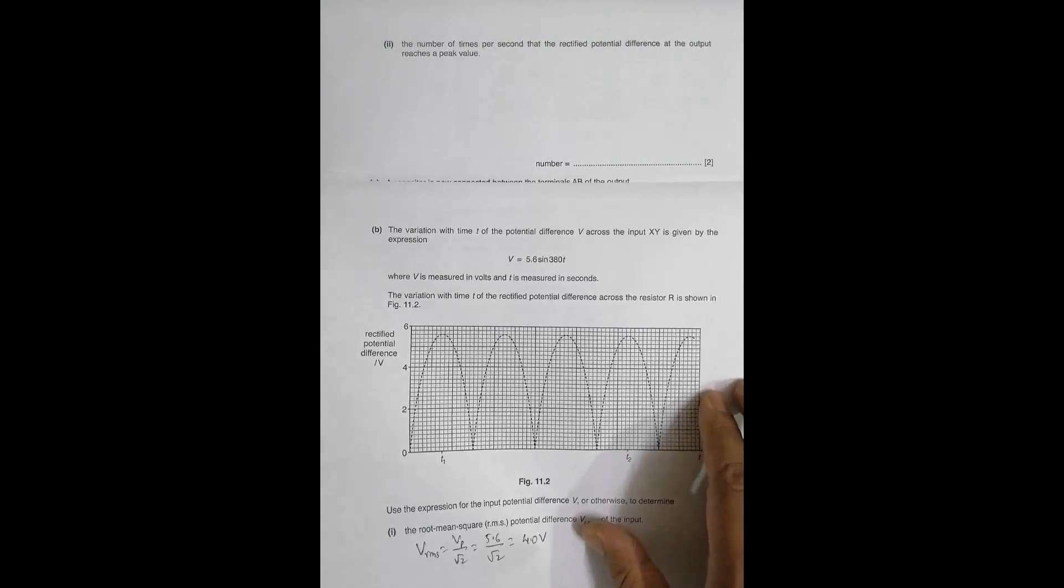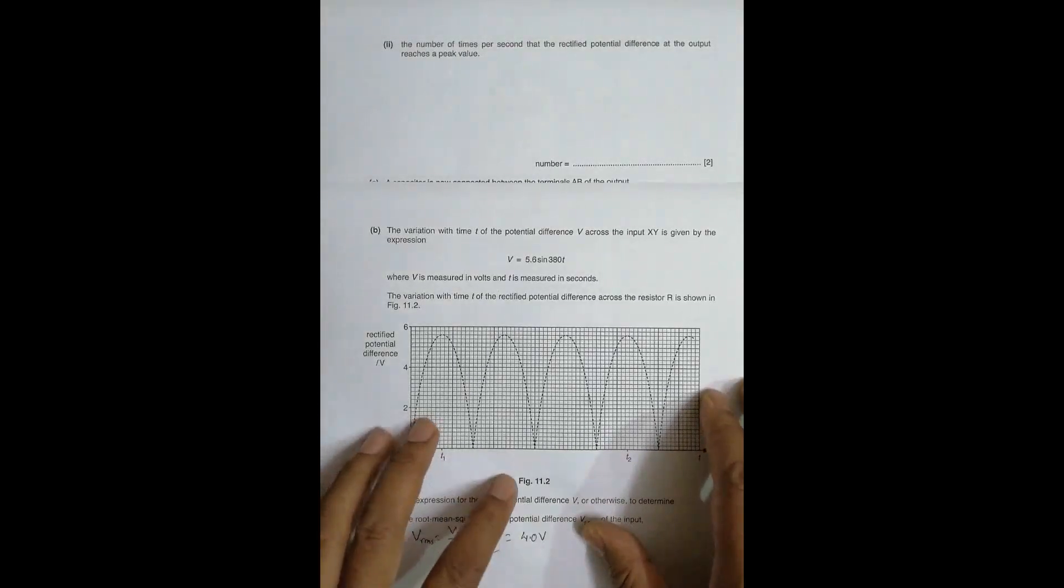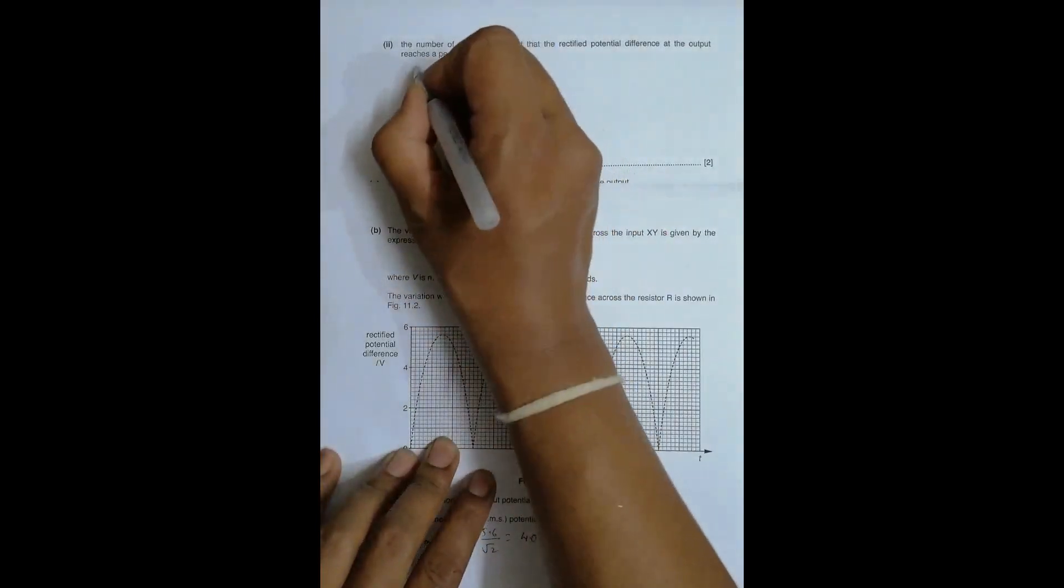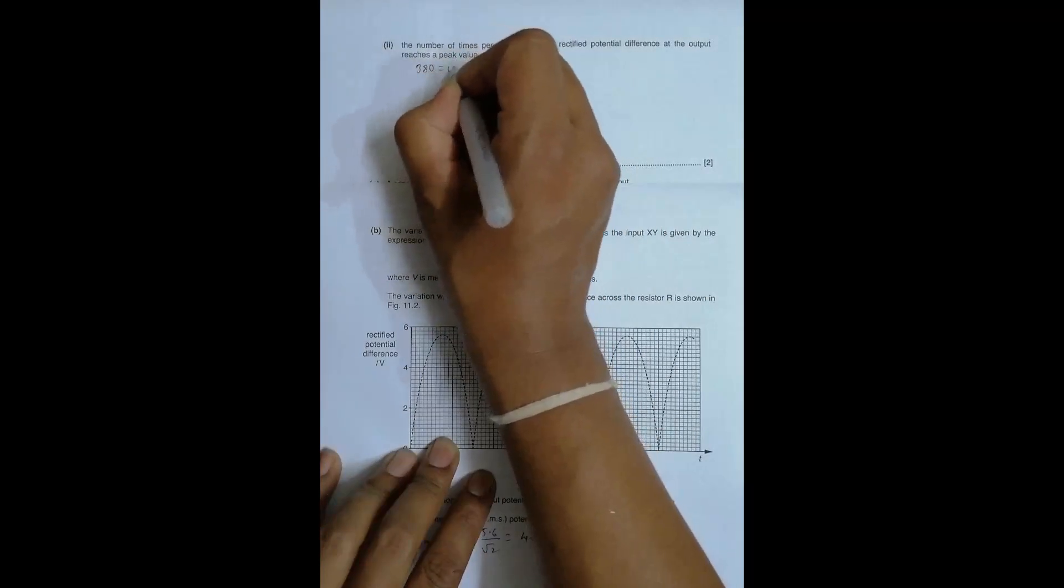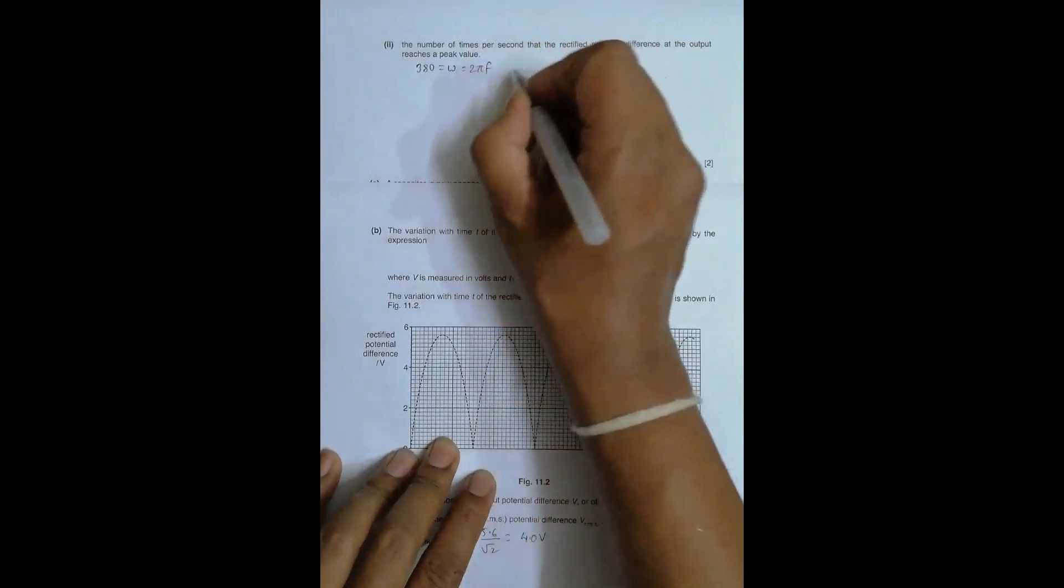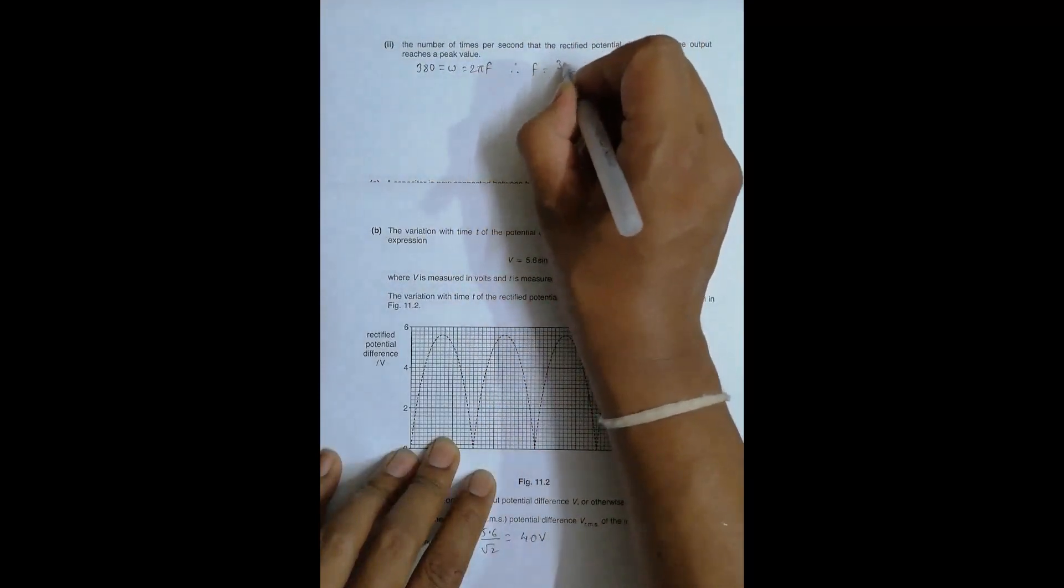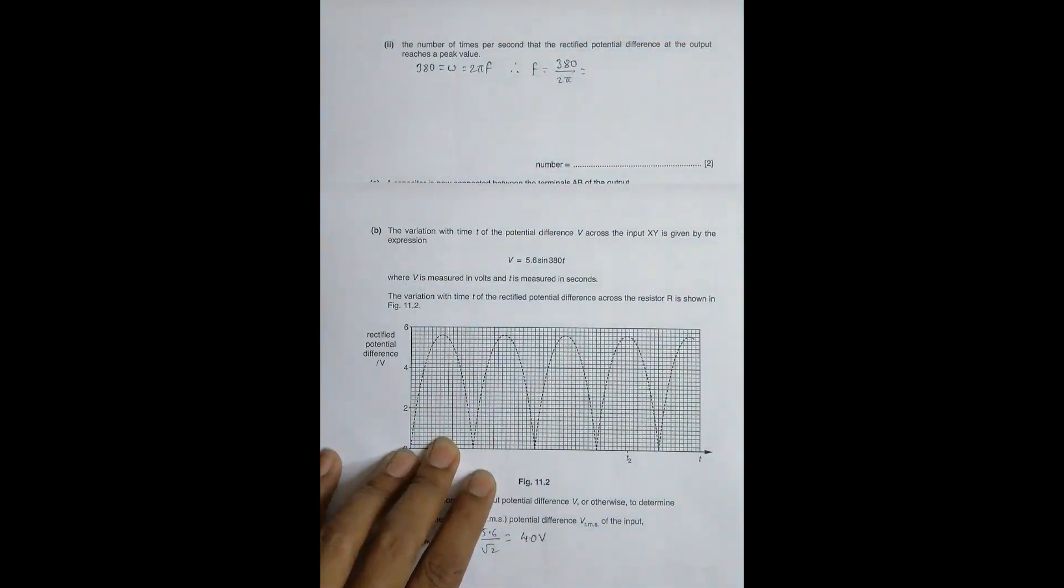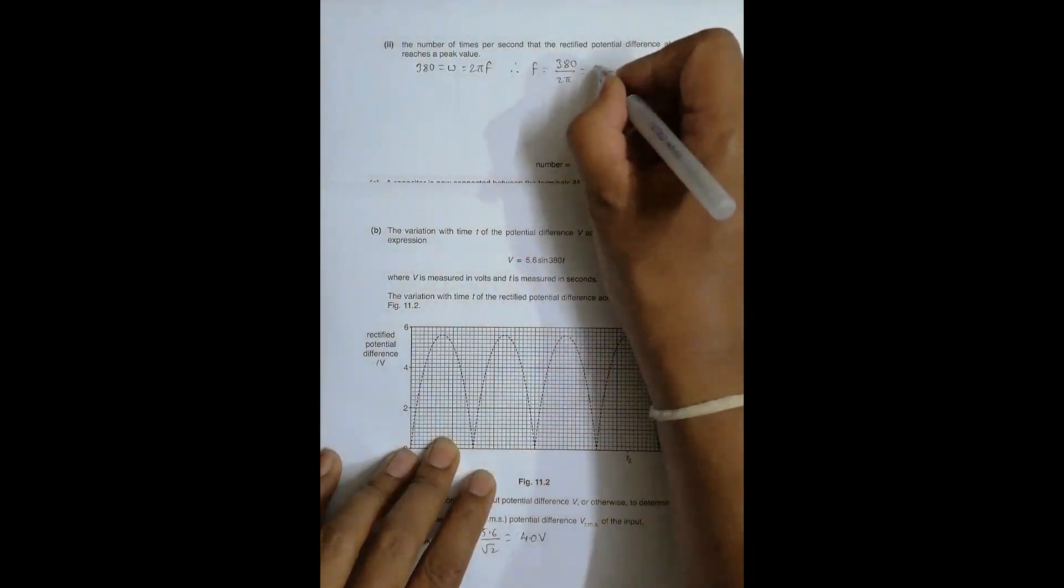Then the next part, the number of times per second that the rectified potential difference at the output reaches a peak value. So it is concerned with frequency. What you do is first of all, we have to find the frequency of the AC. Now if you go through this wave, 380 is equal to omega. Omega is the angular velocity and it's equal to 2πf. So that means f is equal to 380 by 2π. And if I use the calculator here, the value of f will be 60.5 hertz.